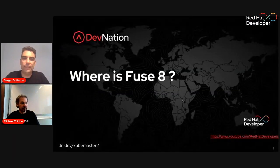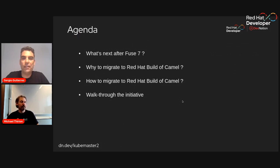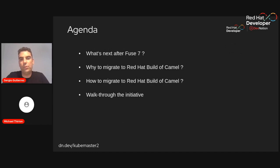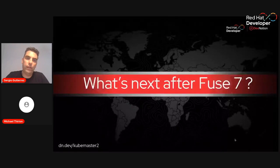Thank you very much, Kevin. Let's see the agenda. This is the breakdown of the agenda we have prepared for today's session. The first topic is what happens with Fuse 8 — we're going to explain the reasons we rebranded the name. Also, we'll give you reasons why, if you're using Fuse 6 and 7, you should migrate to the latest version of Camel, and some information about how to migrate, plus a live demo showing how to migrate a Fuse 6 OCI service to Camel on Quarkus.